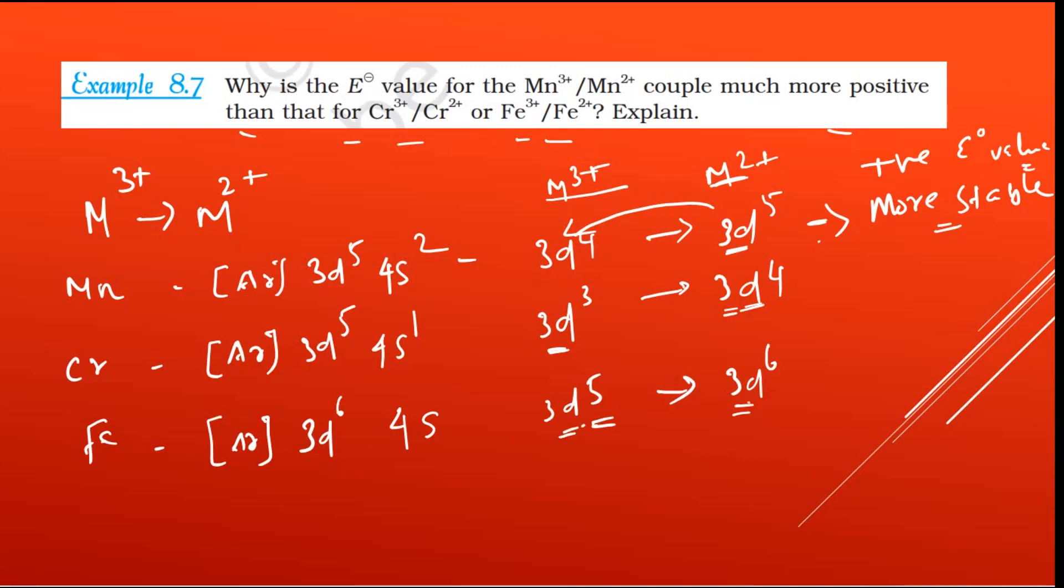3d⁵ is stable and 3d⁶ is less stable than 3d⁵, so this does not show so much interest. So the value will be less positive or more negative than that of the manganese one. So that is the reason why these things are less positive or more negative and why manganese is more positive than the other things.